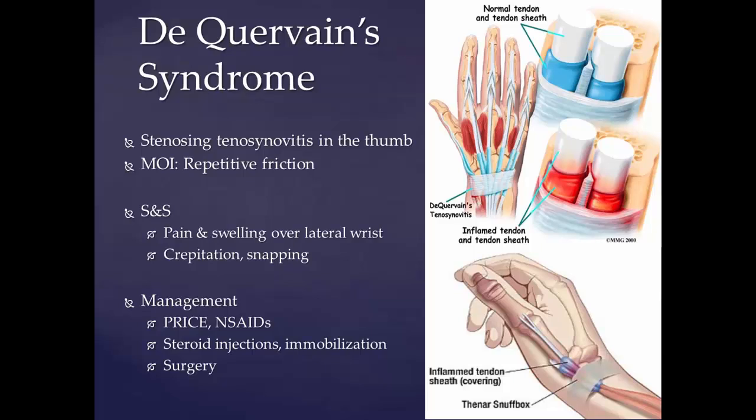De Quervain syndrome is typically a result of repetitive movements and stress on the wrist. Postures where the thumb is held in abduction and extension may contribute to this condition. People who perform rapid repetitive activities involving pinching, grasping, pulling, or pushing are considered at increased risk. Symptoms include pain at the radial side of the wrist, spasms, tenderness, occasional burning sensation, swelling over the thumb side of the wrist, and difficulty gripping.